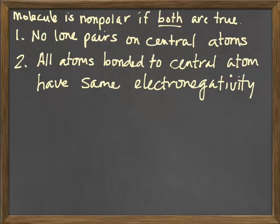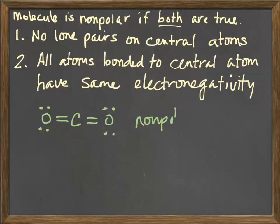Let's apply the rules to carbon dioxide. Look at the Lewis structure and ask: are there any lone pairs on the central atom? No. Are the atoms bonded to the central atom the same? Yes, they're both oxygen. Therefore this is nonpolar. Is that easier than the vector approach?